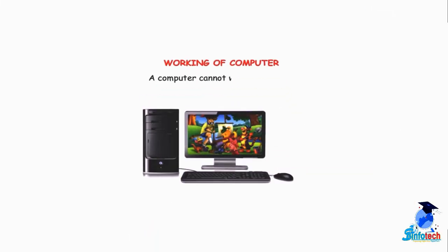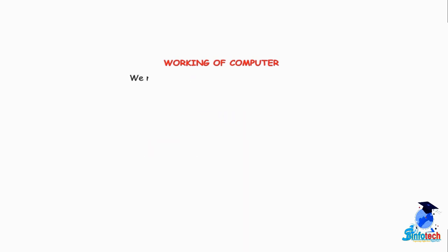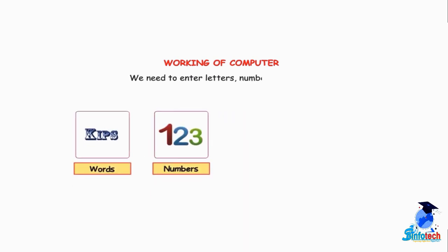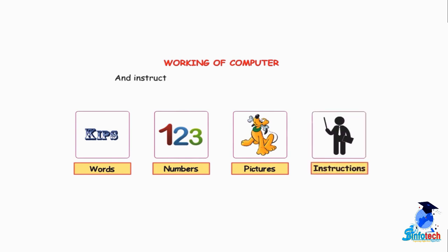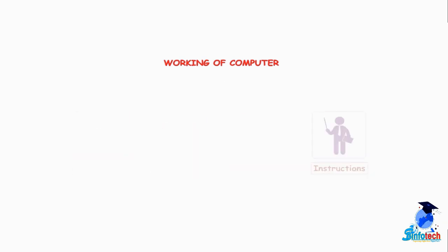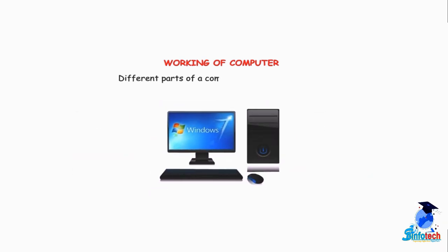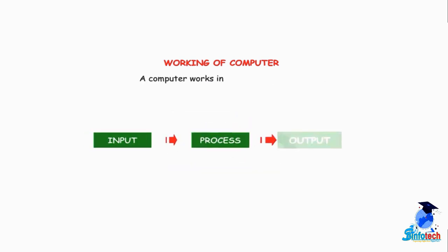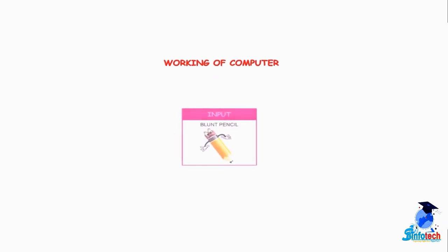A computer cannot work on its own. We need to enter letters, numbers, pictures and instructions into the computer to make it work. These are called data. Different parts of a computer do different tasks. A computer works in three basic steps: Input, Process, and Output.